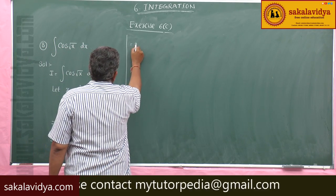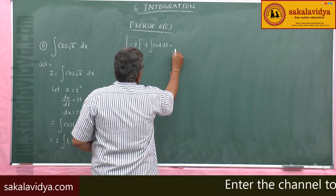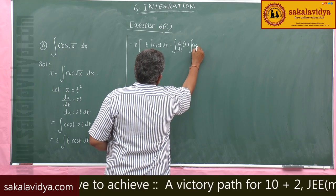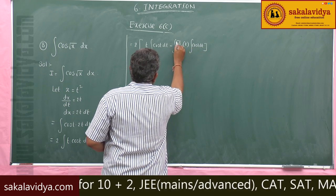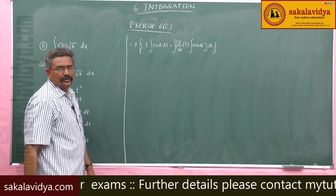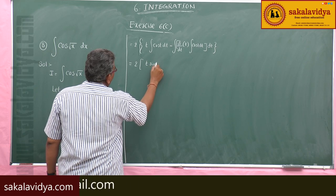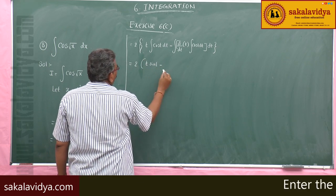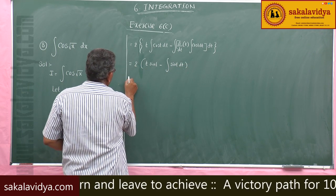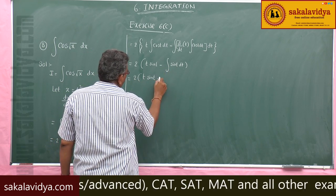This is 2 times [t · integral of cos(t) dt − integral of (d/dt of t) · integral of cos(t) dt · dt]. This gives 2 times [t·sin(t) − integral of sin(t) dt]. That equals 2 times [t·sin(t) − (−cos(t))], which is 2[t·sin(t) + cos(t)].